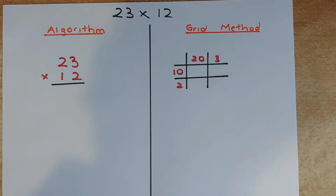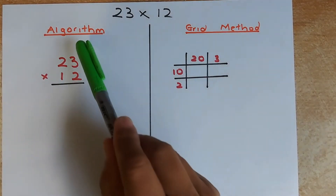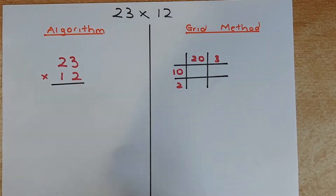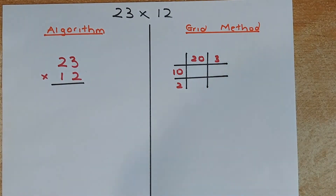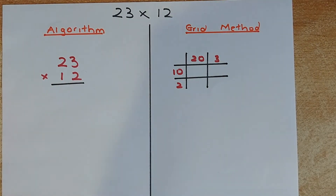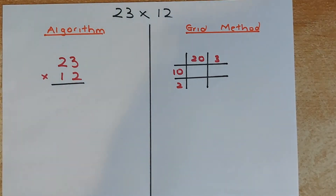So we are going to first multiply 23 by 12. We are going to do two methods. The first method is called the algorithm method and the second method is the grid method. The grid method is useful when you are doing algebra in the future. So we shall do the algorithm method first followed by the grid method.